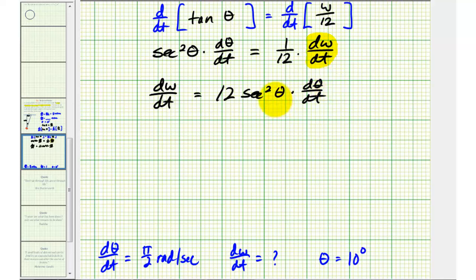Well, we know theta is equal to 10 degrees, and d theta dt is equal to pi over 2 radians per second, which means dw dt is equal to 12 times secant squared 10 degrees times pi over 2. Well, 12 times pi over 2 is equal to 6 pi, so we have 6 pi times secant squared 10 degrees.